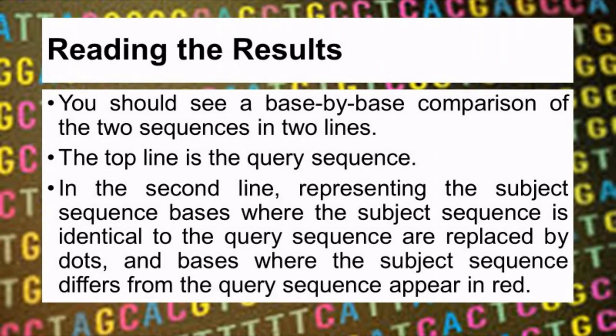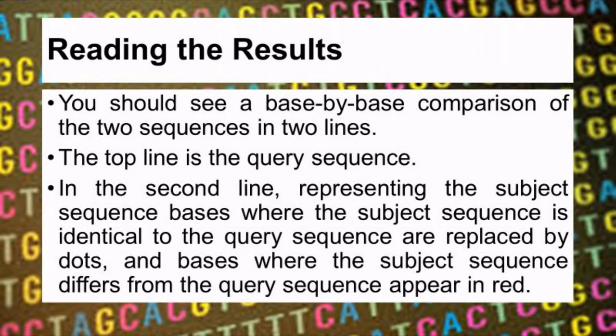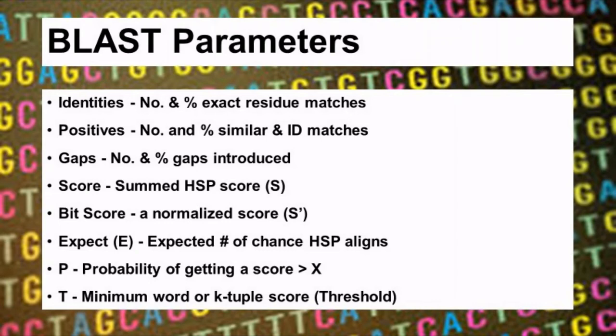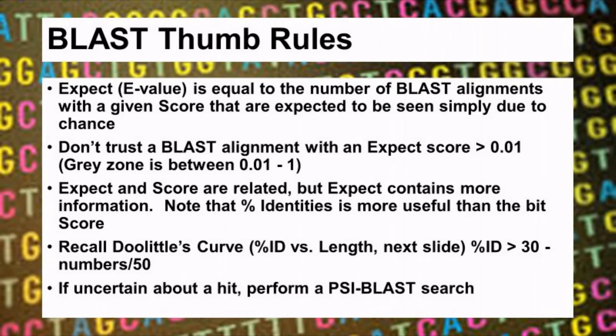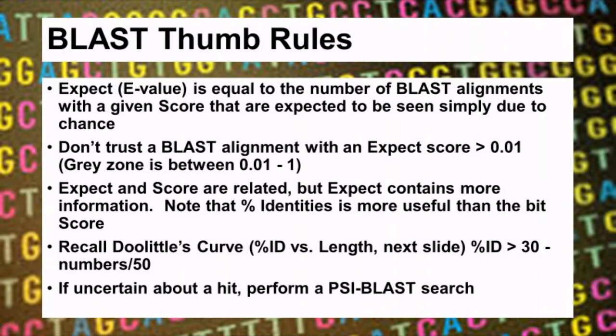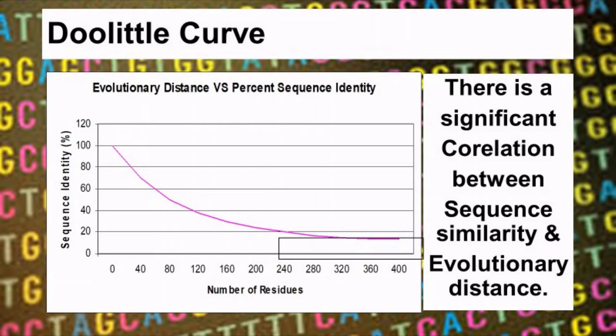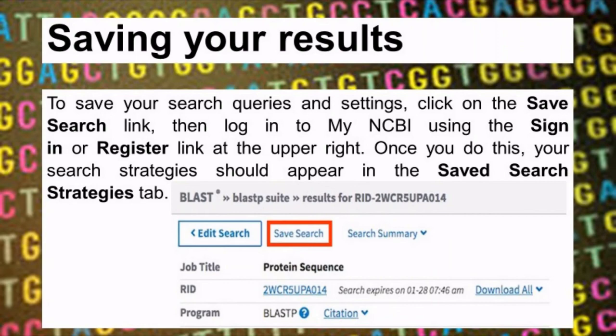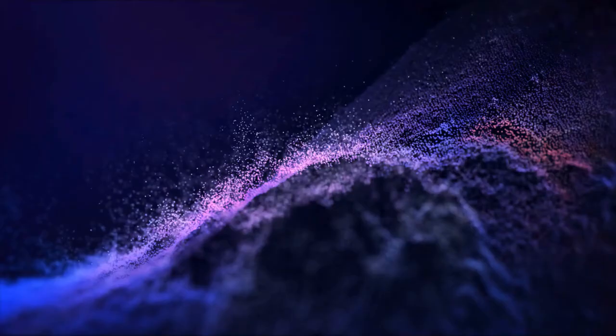When reading the results, the important details to note include the maximum score, total score, identities, positives, gap scores, and bit score. The E-value — the expected value — is the most important parameter. Based on the E-value, you can determine the relationship between your sequence and the other sequences in the database. There is a significant correlation between sequence similarity and evolutionary distance, which is depicted in the Doolittle curve. You can also save your results for further study.